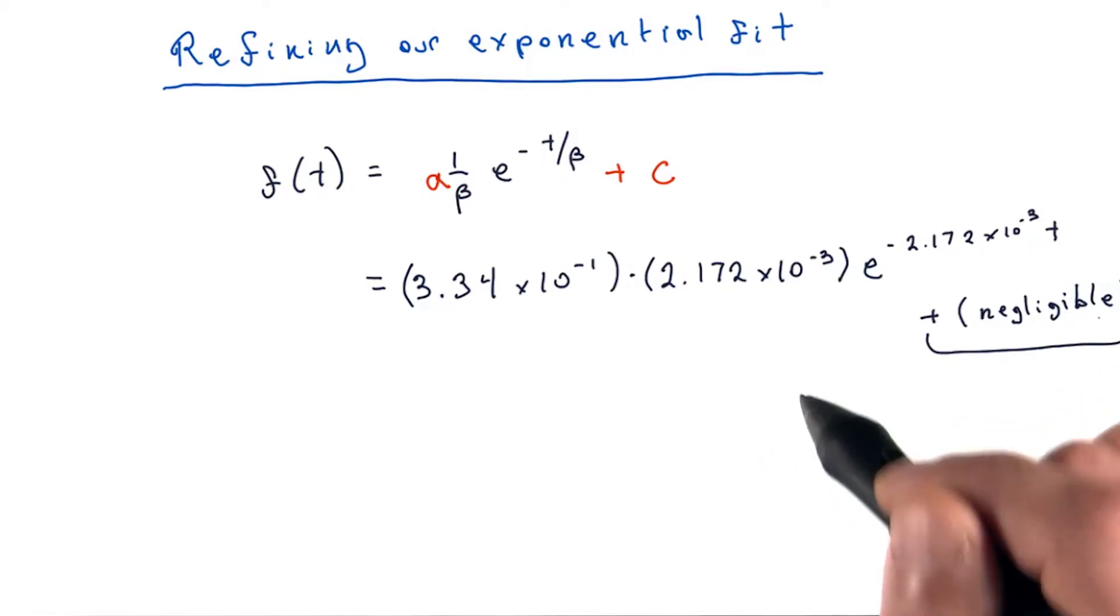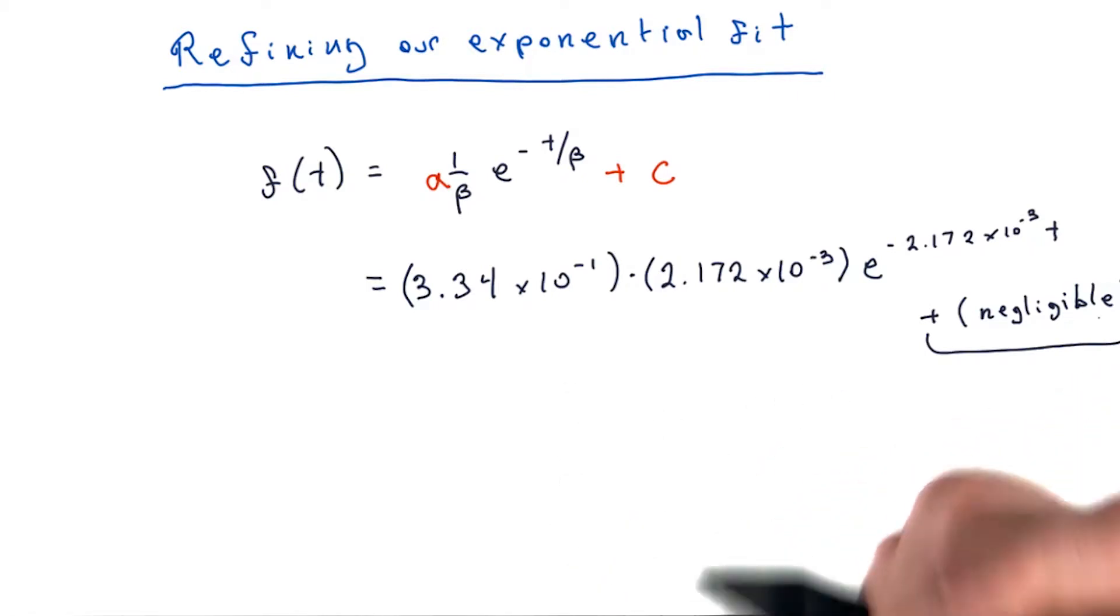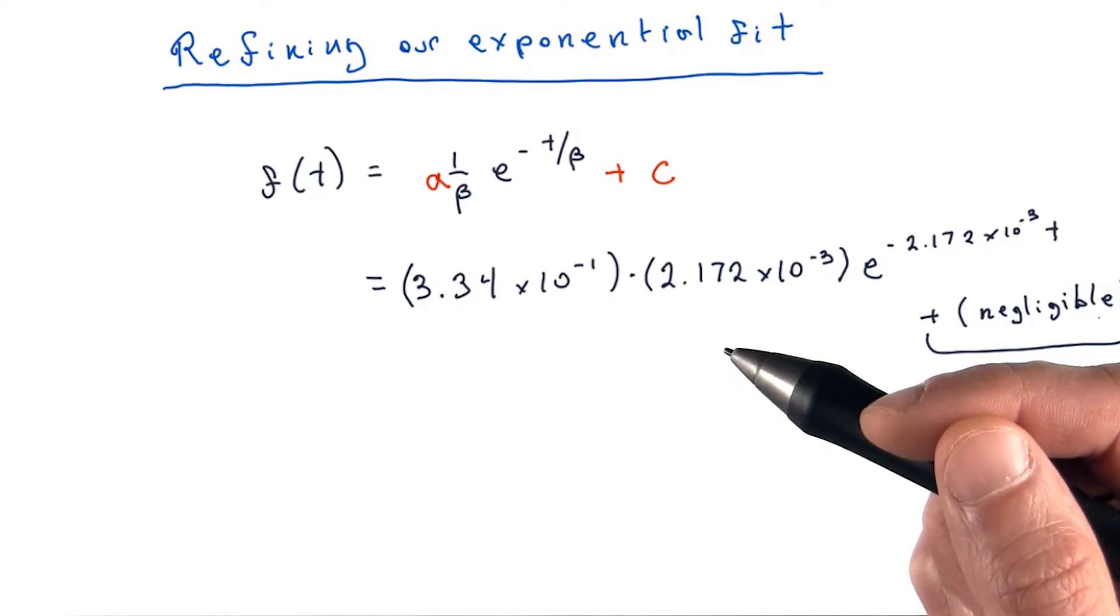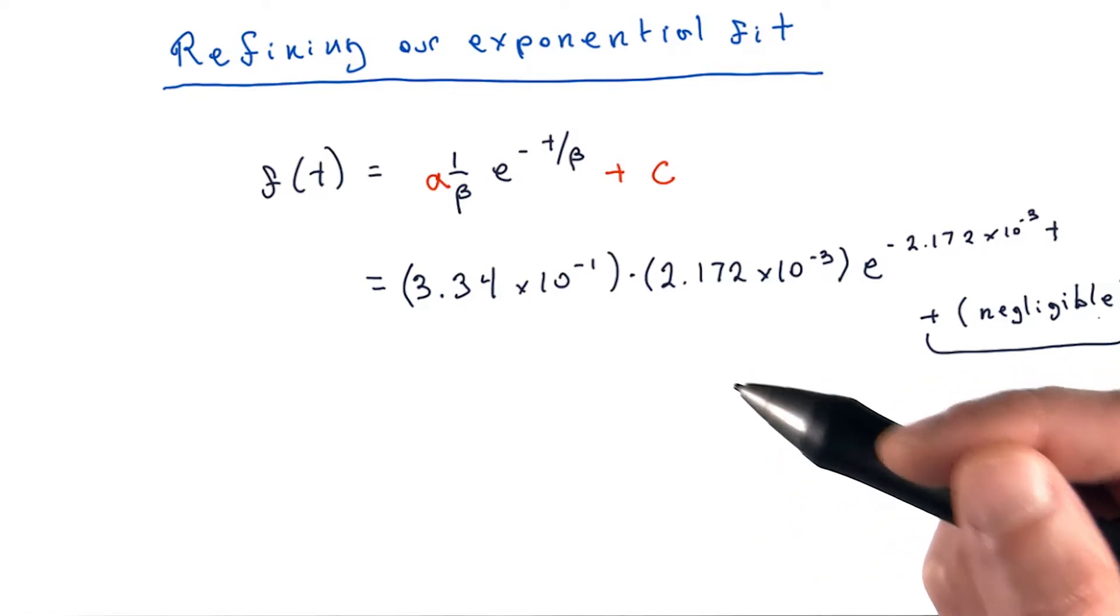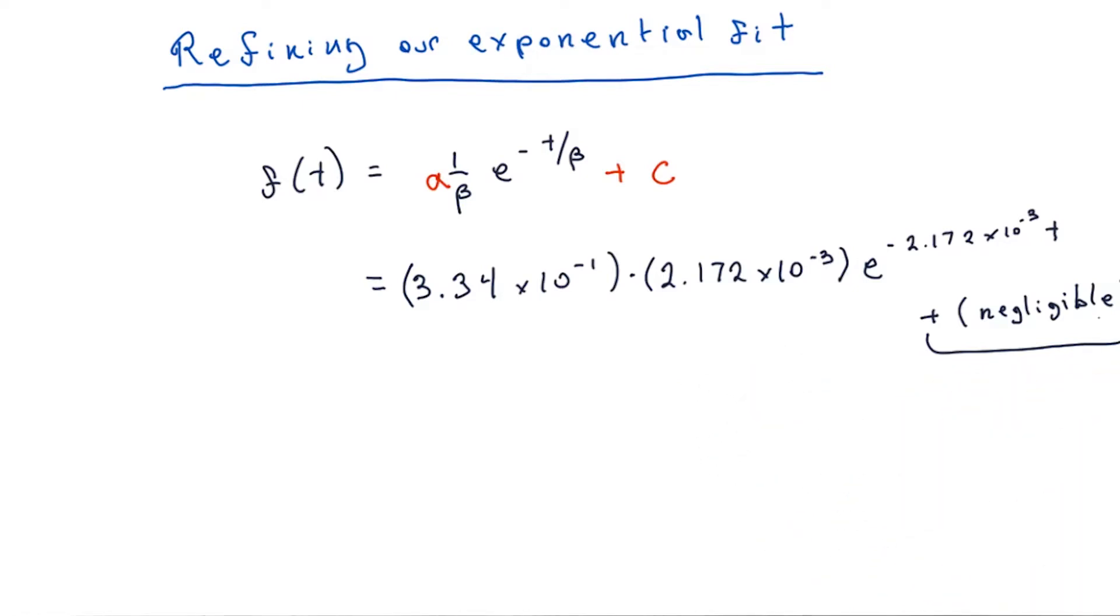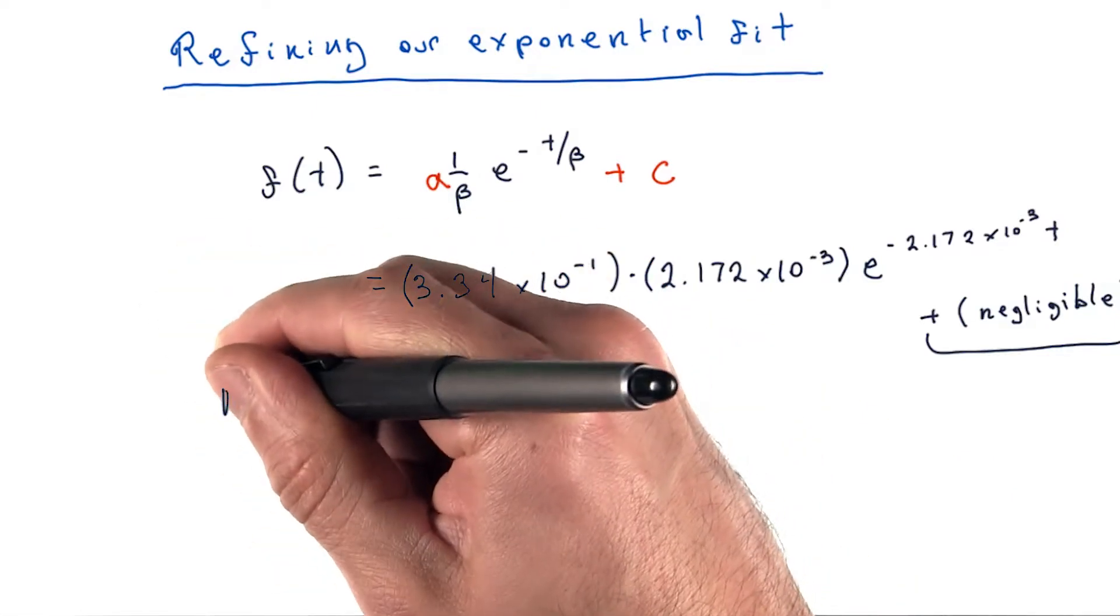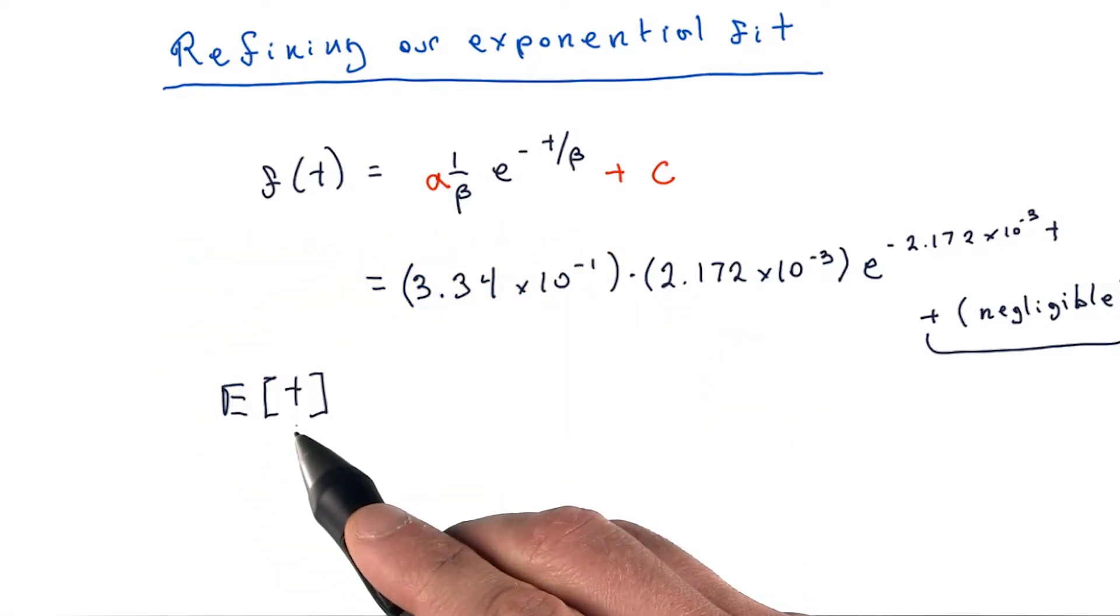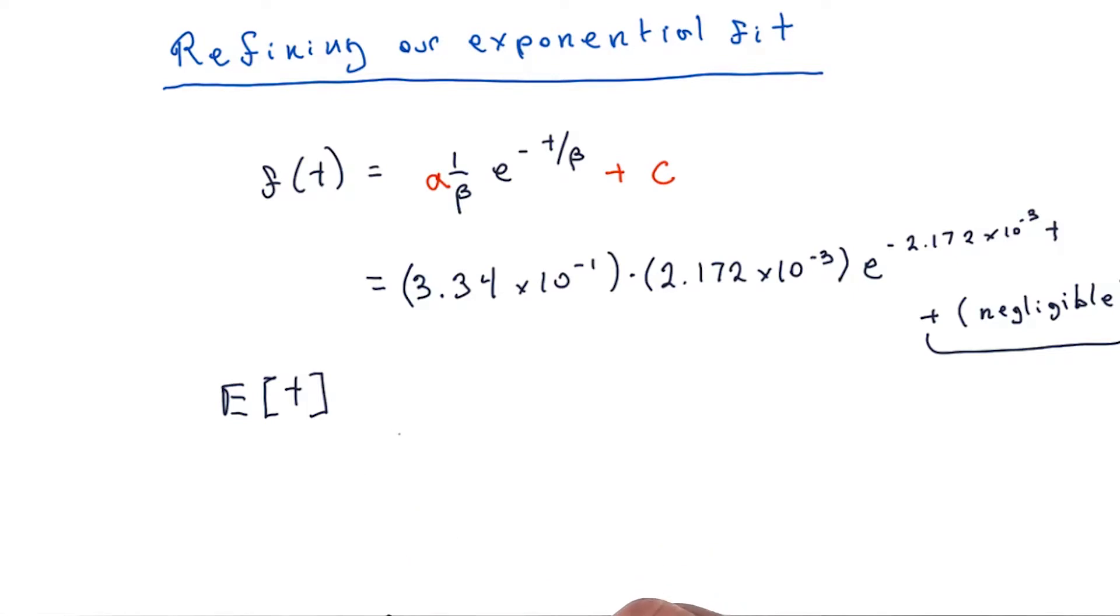So recall that once we've got our model, in order to go from our model to our guess of the number of seconds to wait, we take the expected value of this. So what we want is expected value of intertweet time, given that the above is our model. And so if we were to evaluate that, that comes to about 153.83 seconds. So that's to be compared against our initial value of 1,451 and a half seconds. Quite a bit smaller.